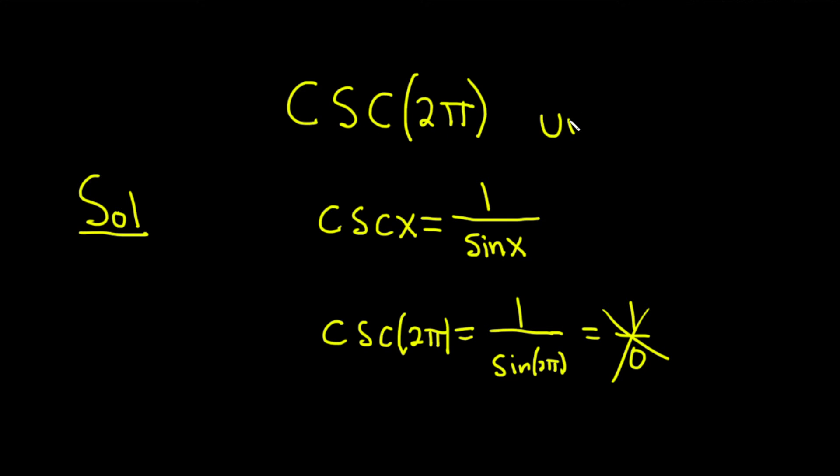So we say that the cosecant of 2 pi is undefined, because you can't compute it. Its value is not one Problems that we can compute in mathematics.